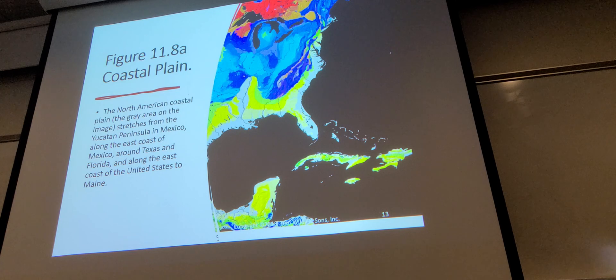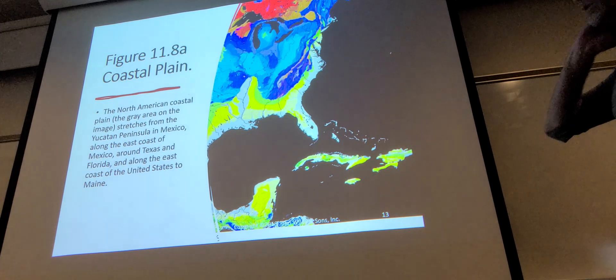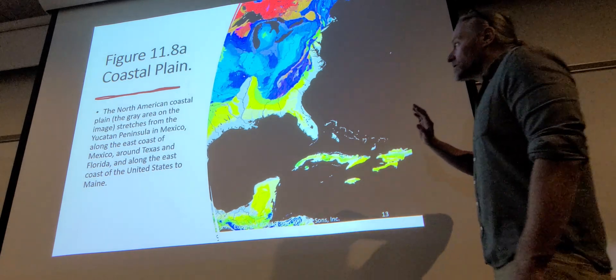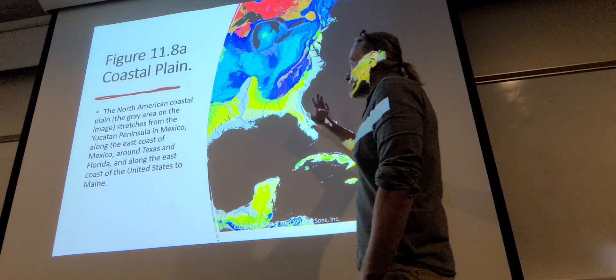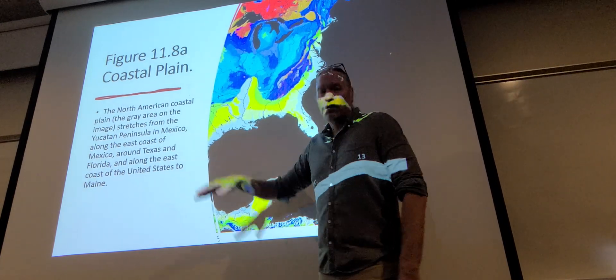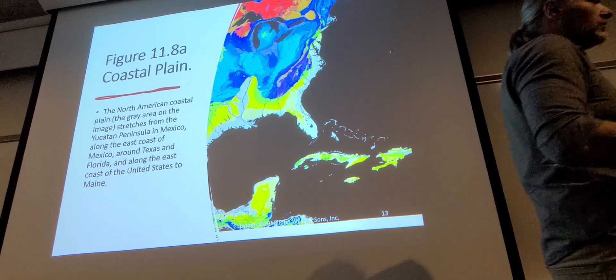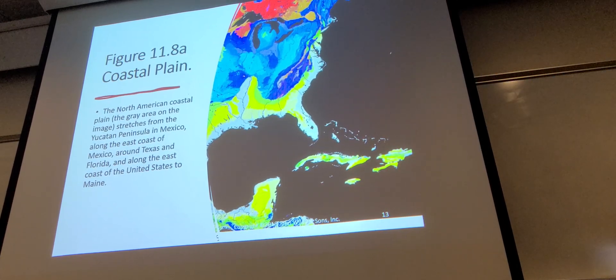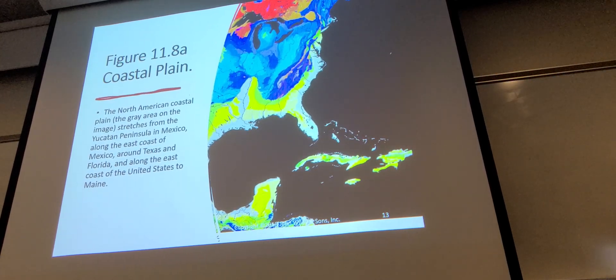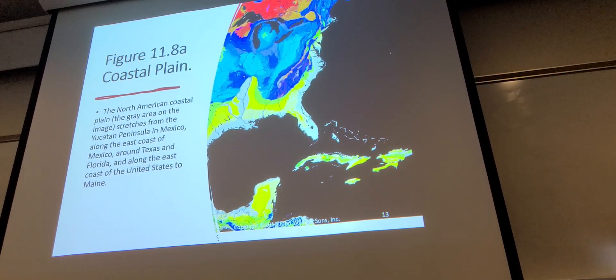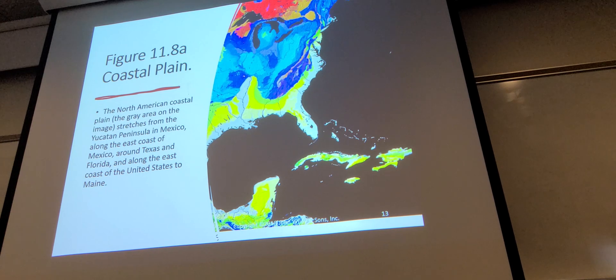Coastal Plains — like many other areas of the world we've looked at, these coastal plains are great for agriculture. Not only is it good growing weather, but the soils are very good.